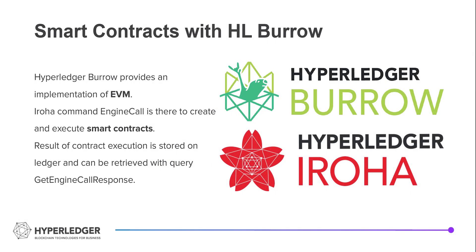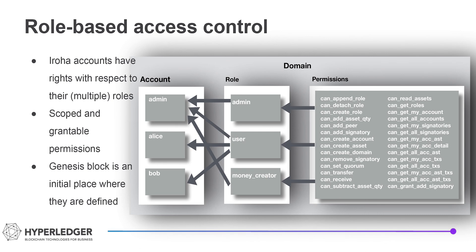Thanks to Hyperledger Burrow integration, users can employ the full power of Ethereum smart contracts to implement their business logic. Iroha also has a role-based permission control system where each Iroha account is mapped to some roles that themselves are mapped to permissions.